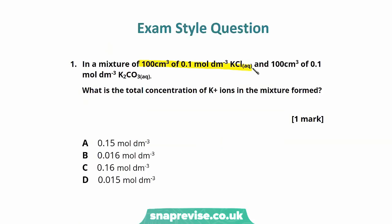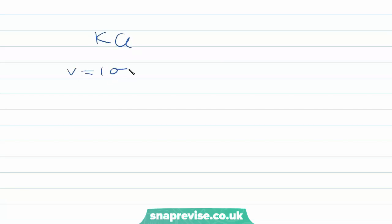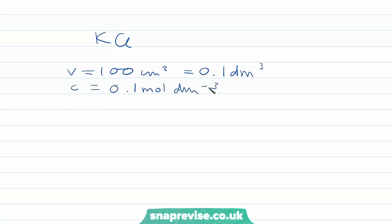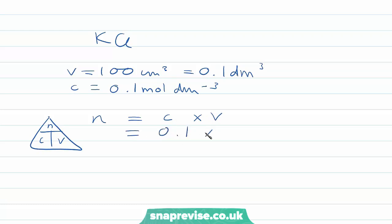In a mixture of 100 centimetres cubed of 0.1 mole per decimetre cubed potassium chloride and 100 centimetres cubed of 0.1 mole per decimetre cubed potassium carbonate, what is the total concentration of potassium ions in the mixture formed? For potassium chloride: volume is 100 cm³ (0.1 dm³), concentration is 0.1 mol/dm³, so number of moles equals 0.1 multiplied by 0.1, giving 0.01 moles.